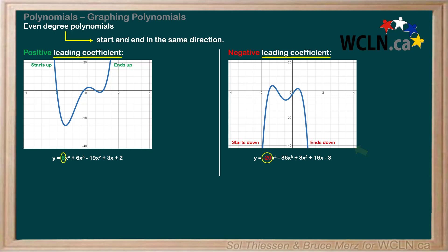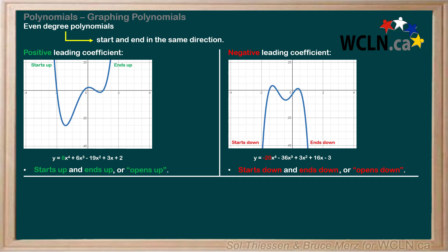So how does the sign of the leading coefficient affect the end behavior? For an even degree polynomial, a positive leading coefficient results in a graph that starts up and ends up, or opens up. A negative leading coefficient results in a graph that starts down and ends down, or opens down. To help remember this, compare with a quadratic function like ax squared plus bx plus c, since you're already familiar with how the sign of the leading coefficient affects a parabola — and this knowledge extends to all even degree polynomials.